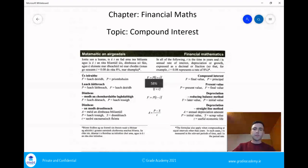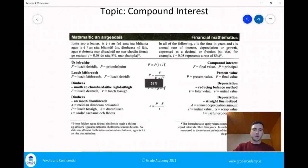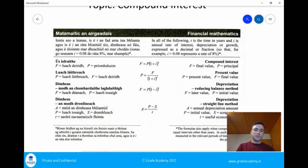If you look at page 30 on your log tables, the compound interest formula is this one here. It's F is equal to P multiplied by 1 plus i all to the power t, where F is the final value.